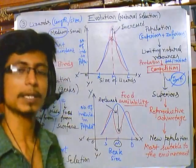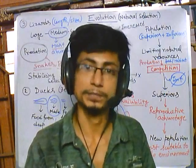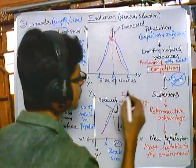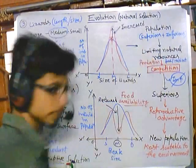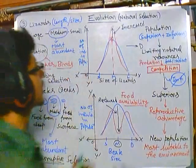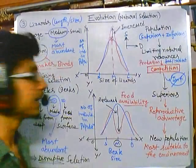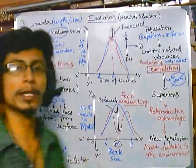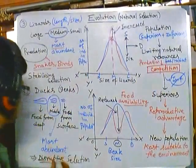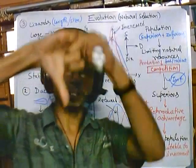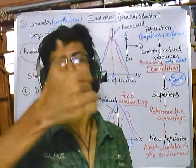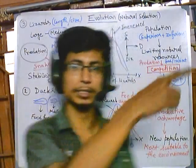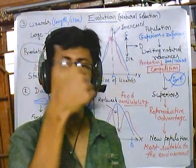In summary, in directional selection the curve shifts in one direction. In stabilizing selection, the middle is favored. In disruptive selection, both extremes are favored. A quick way to remember: disruptive selection looks like a thumbs down (the middle is reduced), stabilizing selection is the reverse — thumbs up (the middle increases), and directional selection points things in one direction.